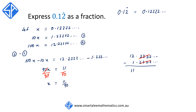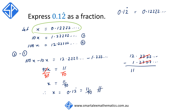Since we started off defining x as being equal to 0.12 repeater, this means that x, which is equal to 0.12 repeater, can be expressed as 11 over 90 as a fraction.